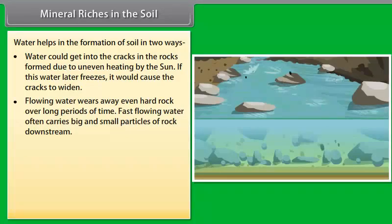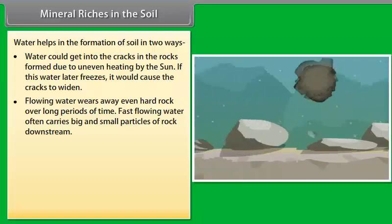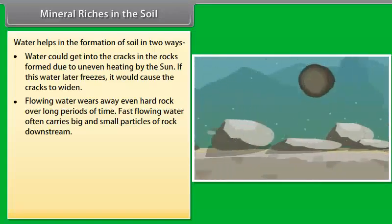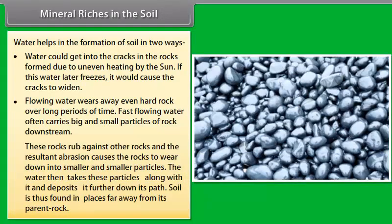Flowing water wears away even hard rock over long periods of time. Fast flowing water often carries big and small particles of rock downstream. These rocks rub against other rocks and the resultant abrasion causes the rocks to wear down into smaller and smaller particles. The water then takes these particles along with it and deposits it further down its path. Soil is thus found in places far away from its parent rock.